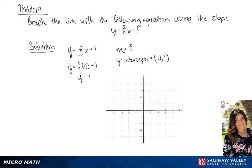We're going to start by graphing the y-intercept. And we are going to use the slope, which is 3 over 2, rise over run.